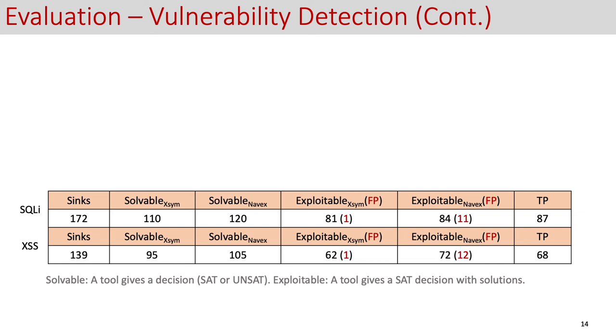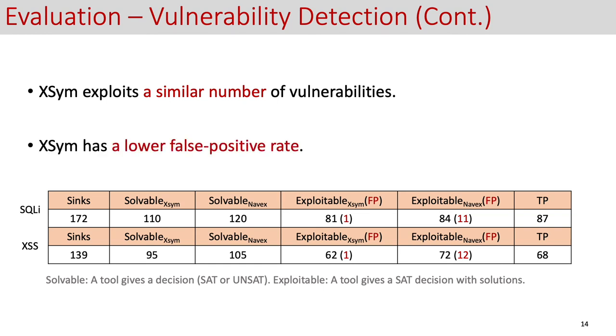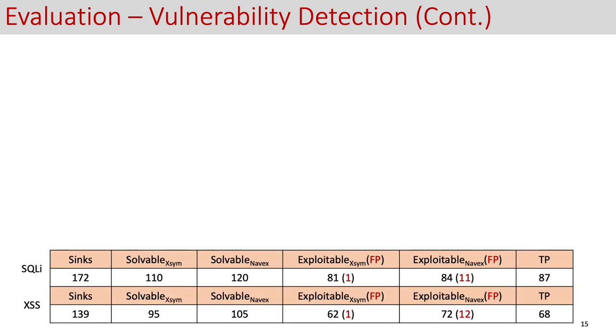Navex, on the other hand, identifies 120 solvable cases and reports 84 exploited ones. This shows that XSym can explore a similar number of vulnerabilities. However, both two can have false positives, where a case is unexplorable but reported as exploitable. The numbers of these false positives are shown in the red in the table. We find that XSym has a low false positive rate.